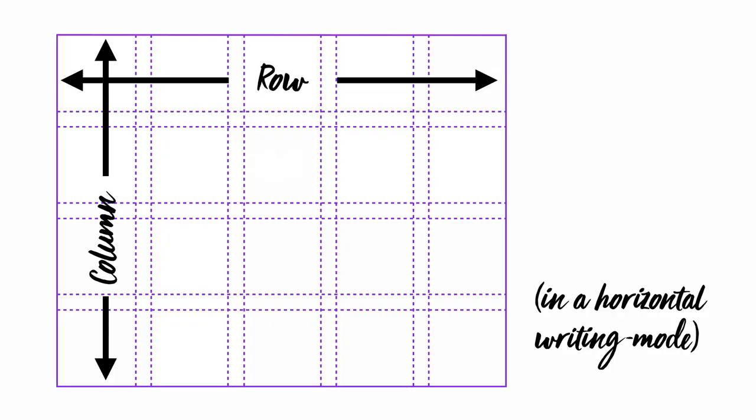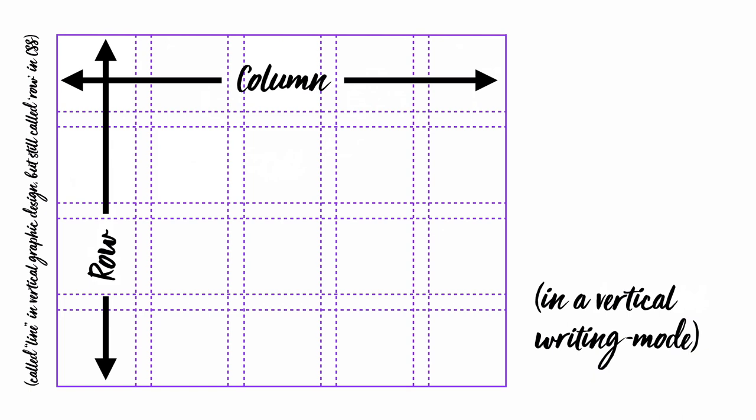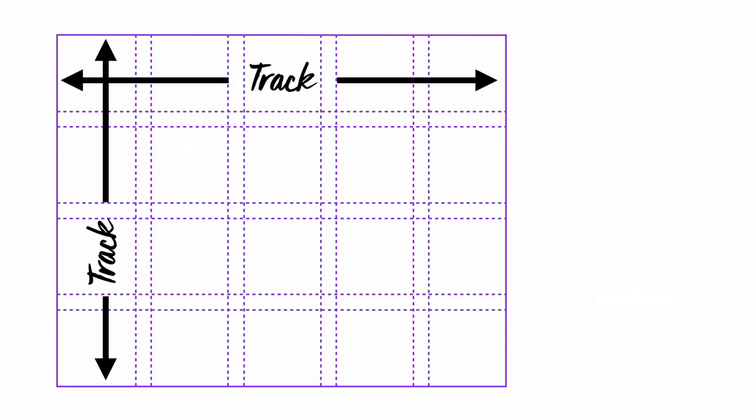We also have rows and columns. For a horizontal writing mode — which you get by default if you don't define a writing mode, and is what most of us use for English text — rows are horizontal and columns are vertical. But you can lay out text in a vertical writing mode, for example Japanese, Chinese, or Korean. If you use grid in a vertical writing mode, it switches the rows and the columns. You can also call rows and columns tracks — it's a nice generic word used in a lot of tutorials. All the track definition code is the same regardless of whether it's a row or a column.